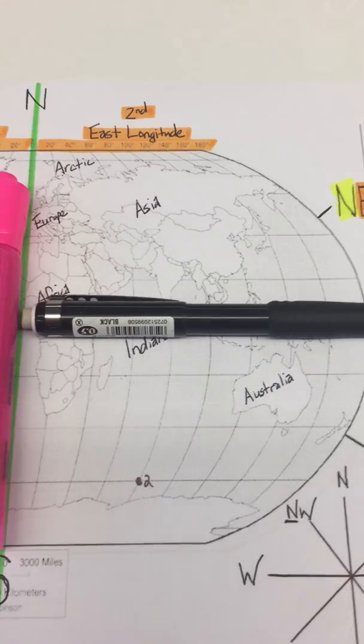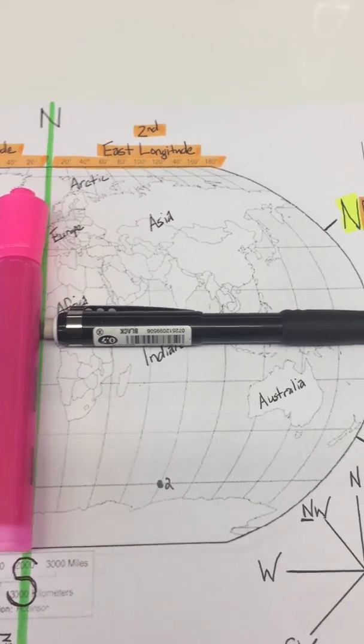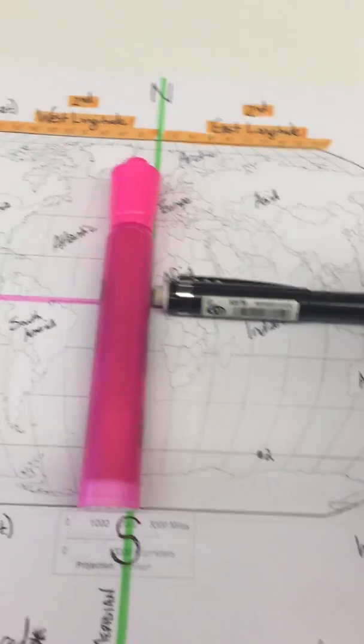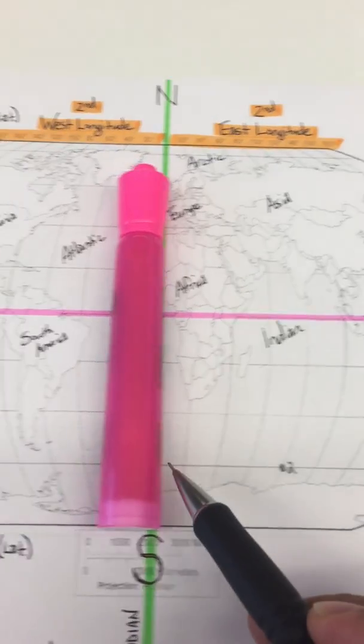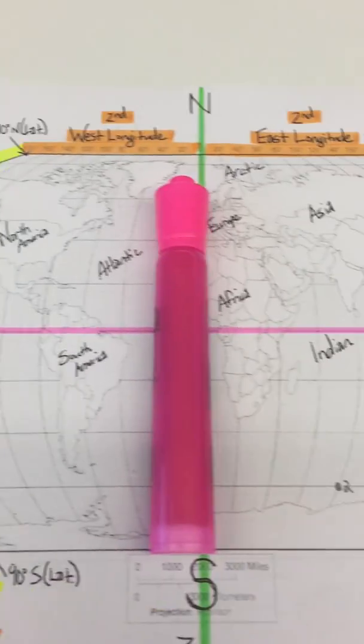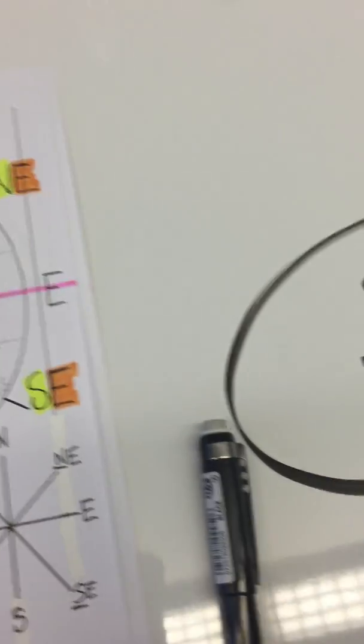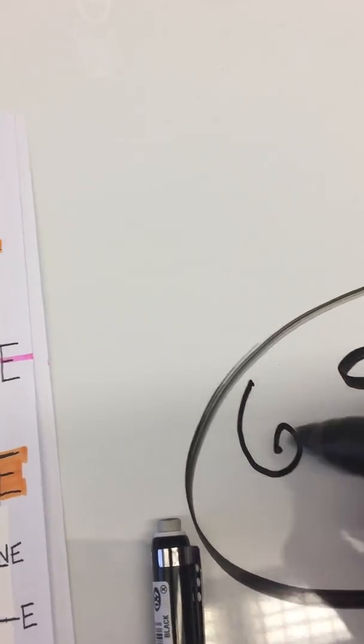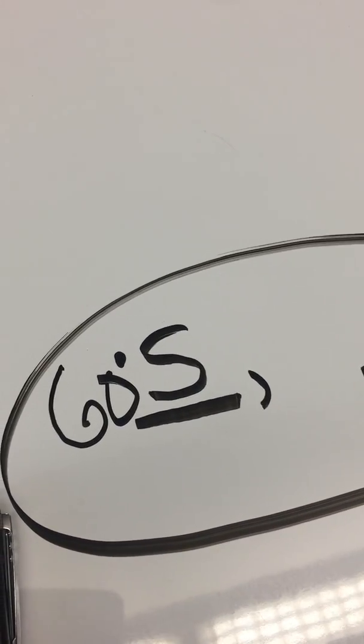So let's take a look at the point, and let's find the actual degree, the number. So point number two, if I were to trace all the way across from point number two, I would run into the number 60. So you would write, right in front of the S, you're going to write 60 degrees south, just like that.